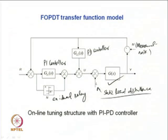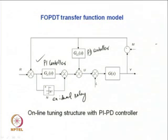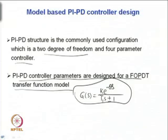For online tuning, initially an ideal relay is connected in parallel with the PI controller and a limit cycle is induced. From the measurements made on the limit cycle output, parameters of the transfer function model — K, θ, and T₁ — will be estimated.